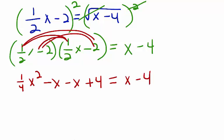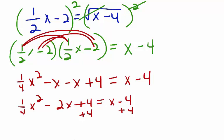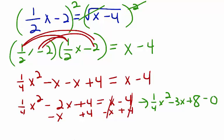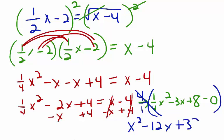My goal is to solve for x. Combining like terms gives one-fourth x squared minus 2x plus 4 equals x minus 4. I'll add 4 to both sides and subtract x from both sides, giving me one-fourth x squared minus 3x plus 8 equals 0. It's going to be difficult to factor when we have a fraction as a leading coefficient, so I'll multiply every term by 4. Cross-canceling gives me x squared minus 12x plus 32 equals 0.